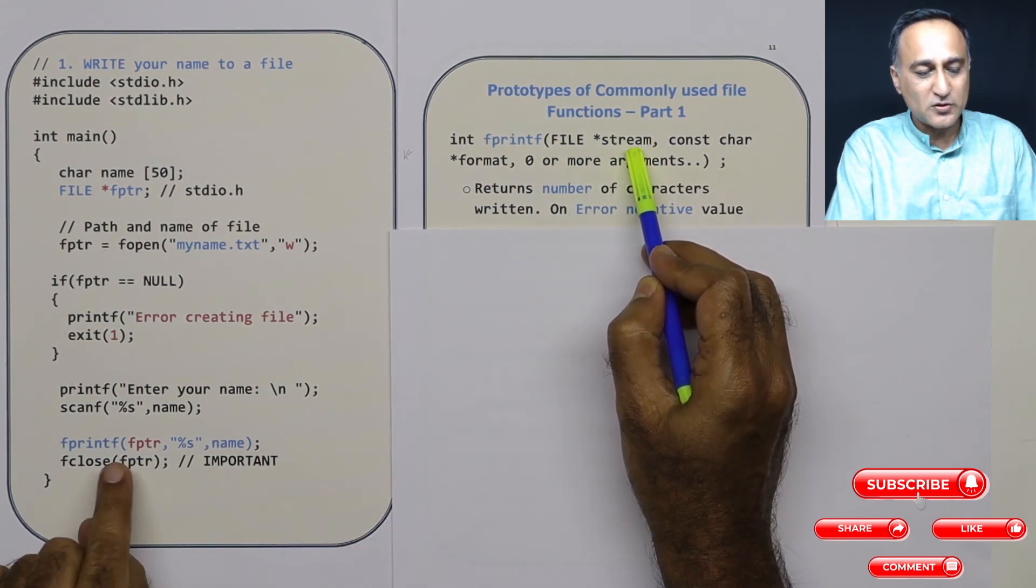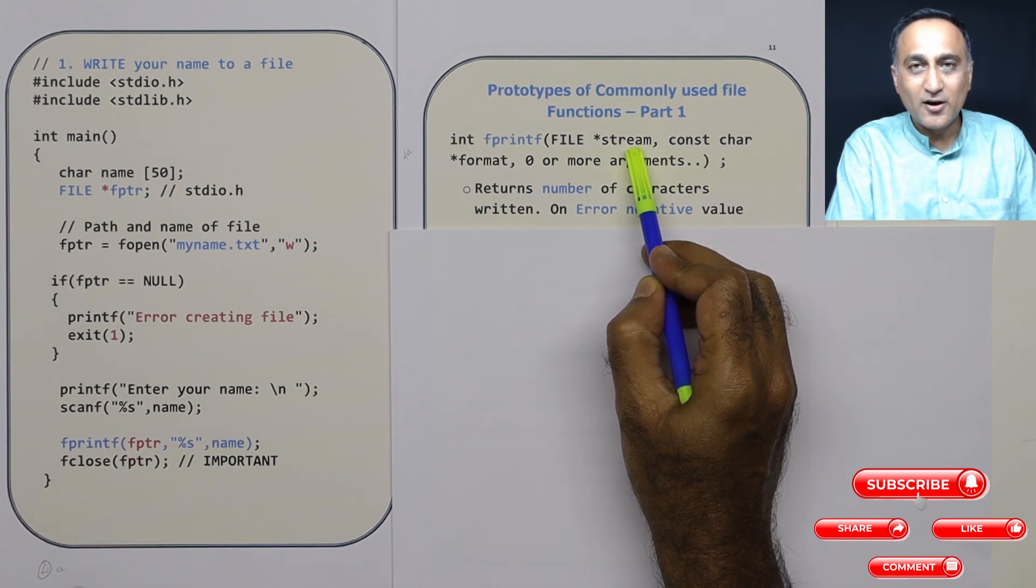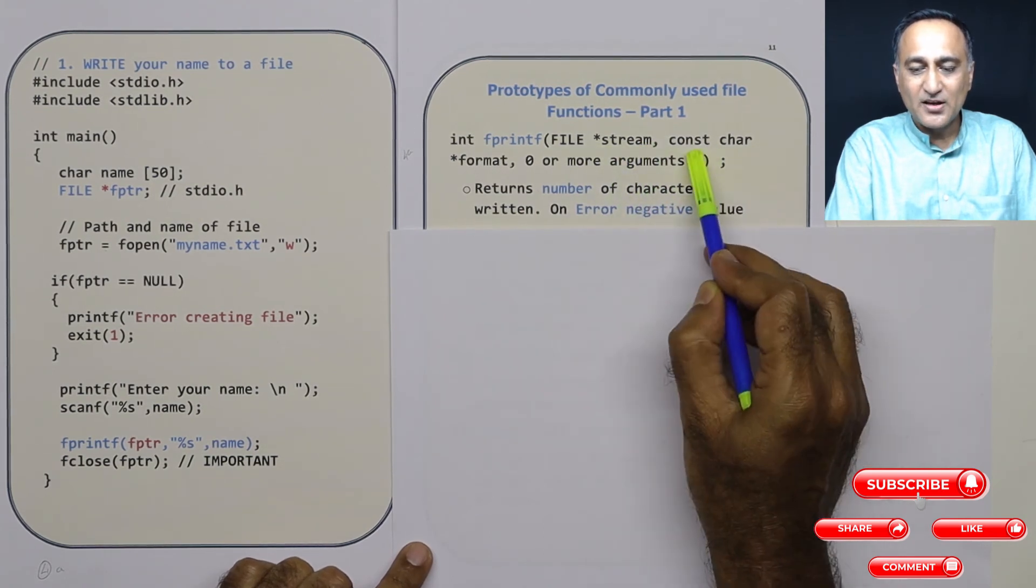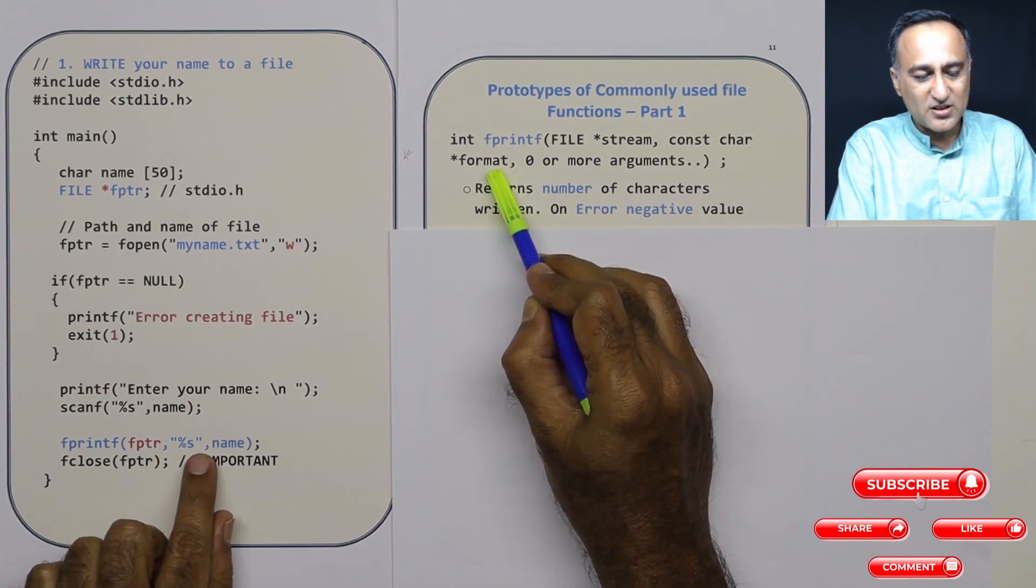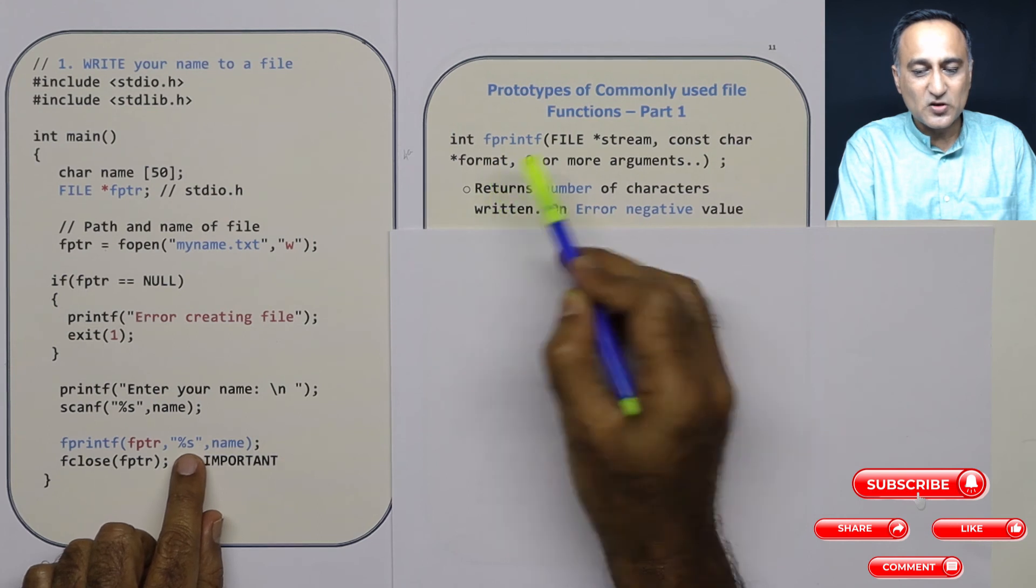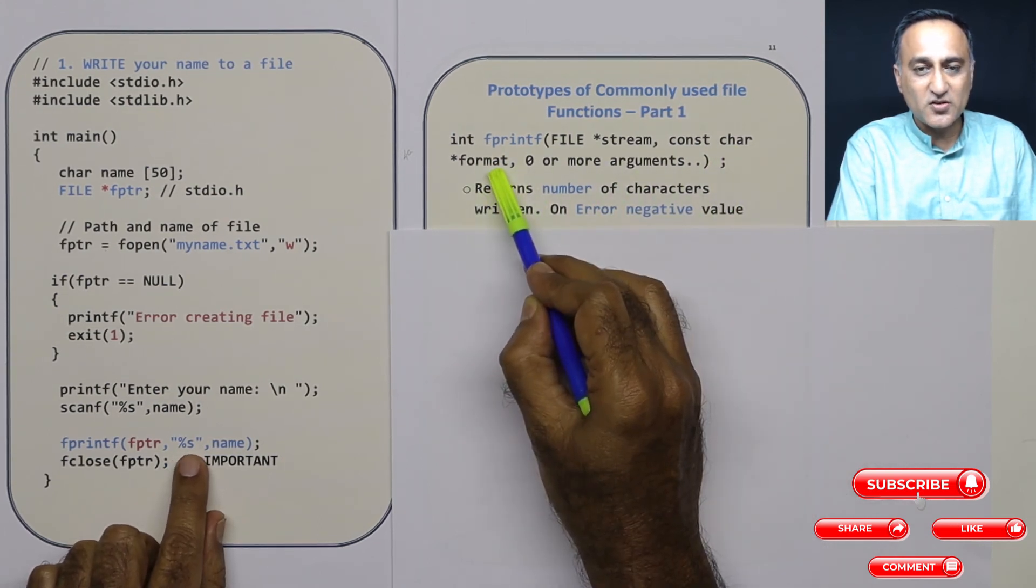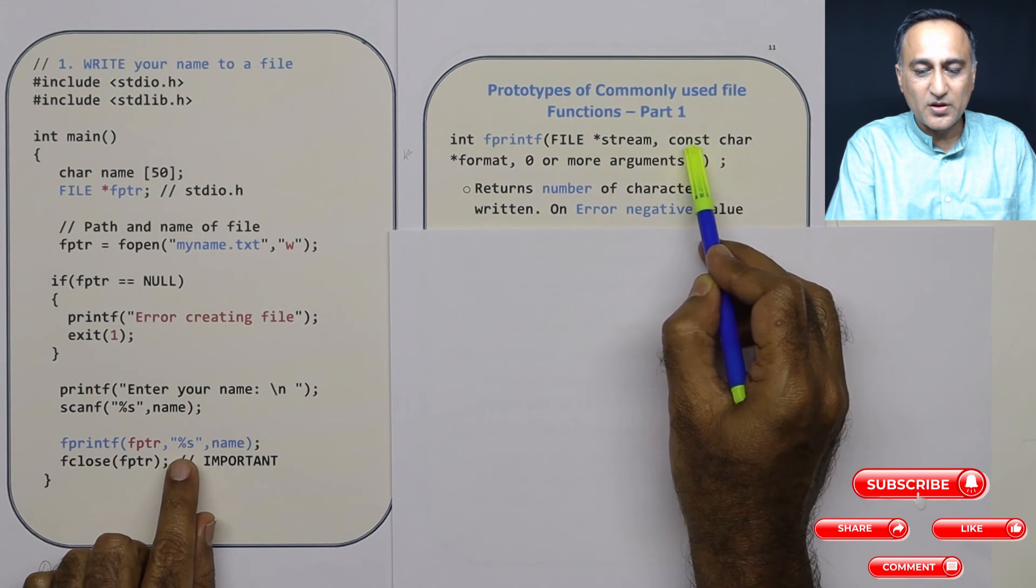So my output destination or output is my file on the hard disk. const char *format - this is whatever is in this double quote, the conversion specifier and whatever it is. This is called the const char format. This is a pointer to a string because this is an array of characters and I should not be able to change. That's why it is referred with the word constant.